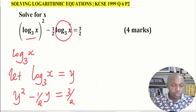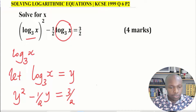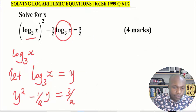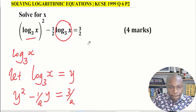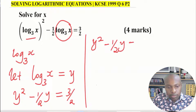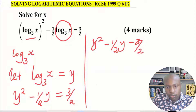By writing it this way, you can see clearly that this is a quadratic equation which needs to be organized to be solved easily. Bring 3 over 2 to the left-hand side, and you get y squared minus half y minus 3 over 2 equals 0.